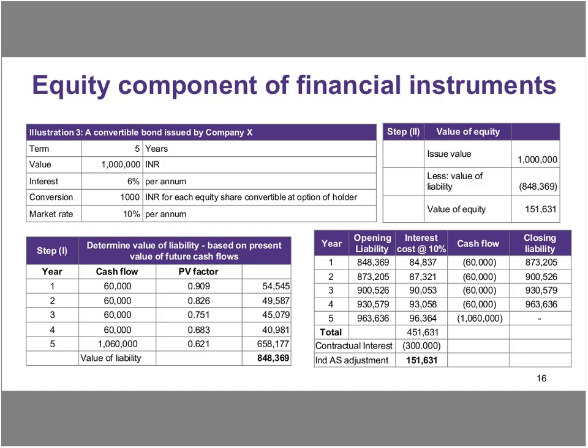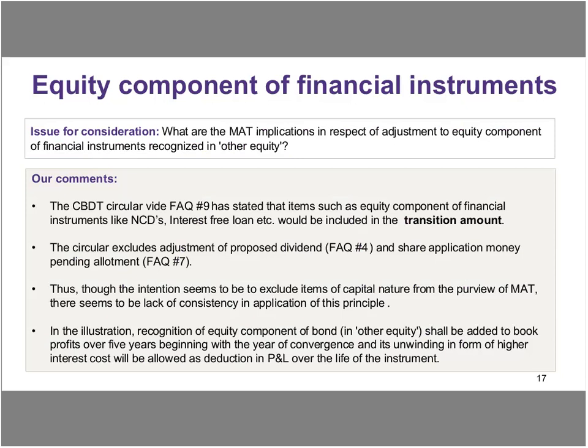On slide 17, the CBDT circular, wide FAQ number 9, has already stated that items such as equity component of financial instruments like NCDs, interest-free loans, etc. would be included in the transition amount. Of course, the word 'etc.' needs to be further decoded and could lead to litigation. This circular already excludes adjustment of proposed dividend and share application money pending allotment, which would suggest the intent seems to be to exclude items of capital nature from the purview of MAT. However, there apparently seems to be an inconsistency from a tax perspective.